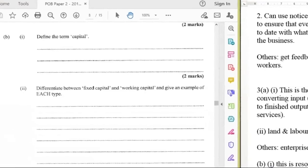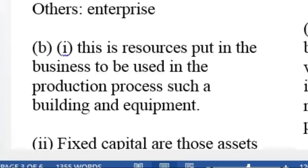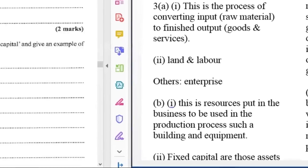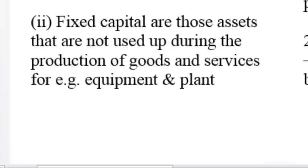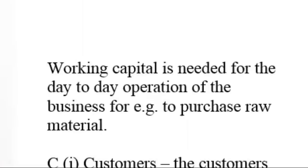B1 says define the term capital. Capital can be considered to be the resources put in the business to be used in the production process, such as building and equipment. B2 says differentiate between fixed capital and working capital and give an example of each type. Fixed capital are those assets that are not used up during the production of goods and services, for example equipment and plants. Working capital is needed for the day-to-day operations of the business, for example to purchase raw material.